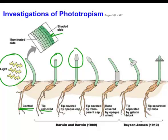So it looks like the tip is responsible, and it looks like you've got to have light striking the tip — if you block the light it won't work. The conclusion was confirmed with an experiment using a clear transparent cap that let the light through: the shoot bent again.